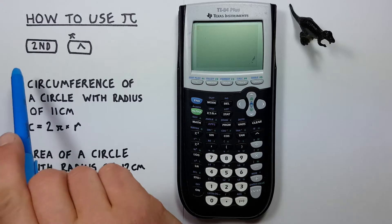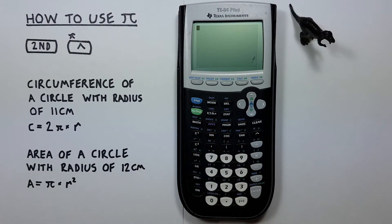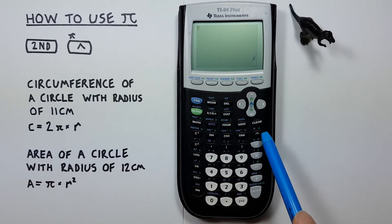To do this we'll use the second function key that looks like this located here and the exponent key or the up arrow or caret key that looks like this located here.